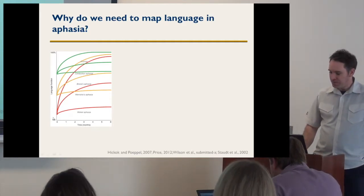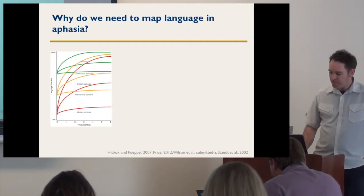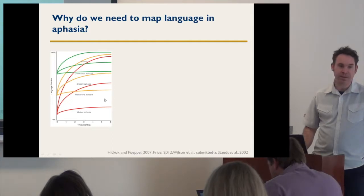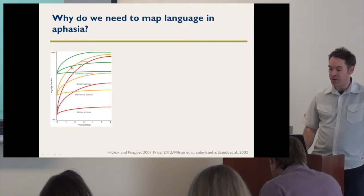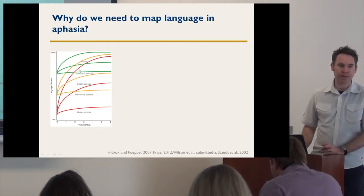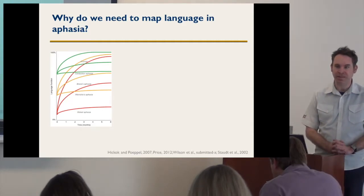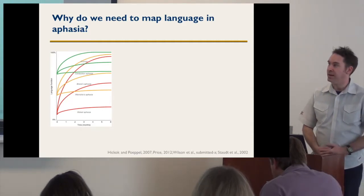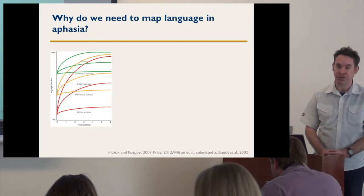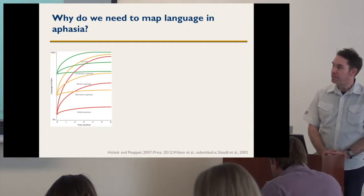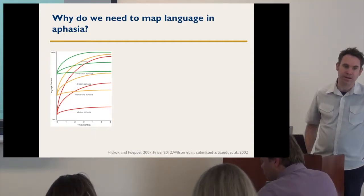We know that after a stroke, almost everybody gets better over time — some to a great extent, and some to a much lesser extent. Regardless of where you start, you're going to improve over time, but we don't really know why. The fact that people improve suggests that there is probably some kind of functional reorganization taking place, and that is the object of much of our research — to understand what kind of functional reorganization underlies the improvement in function we see over the first weeks and months after a stroke.